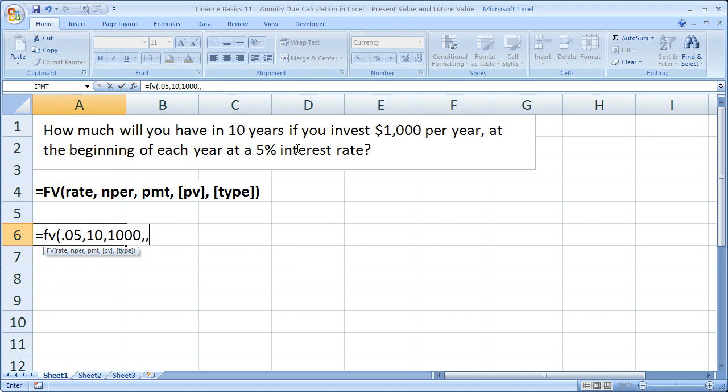You can either put a zero or a one here. We want to put a one. By default it's going to be zero—if you leave it blank, it's zero. What that means is it's going to assume that the annuity is paid in at the end of the period. In this case, at the end of the year.